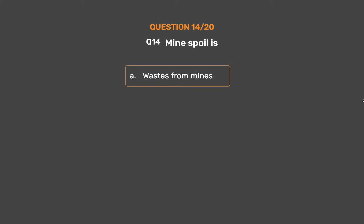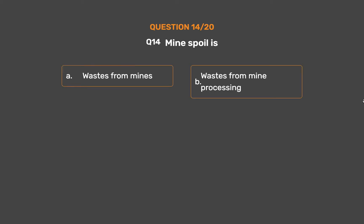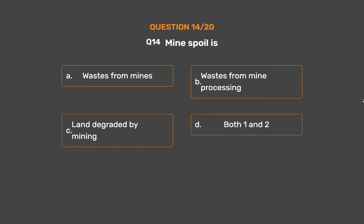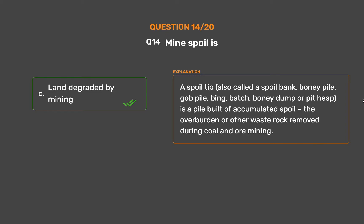Question number fourteen: mines spoil is — Option A: wastes from mines. Option B: wastes from mine processing. Option C: land degraded by mining. Option D: both 1 and 2. The correct answer is option C, land degraded by mining. A spoil tip — also called a spoil bank, bony pile, gob pile, bing, batch, bony dump, or pit heap — is a pile built of accumulated spoil, the overburden or other waste rock removed during coal and ore mining.